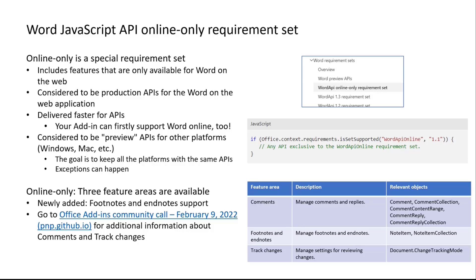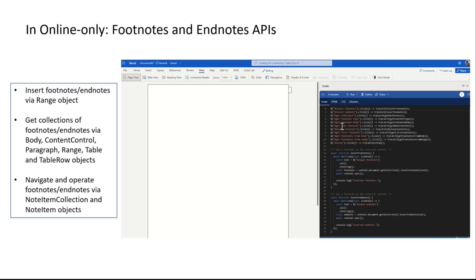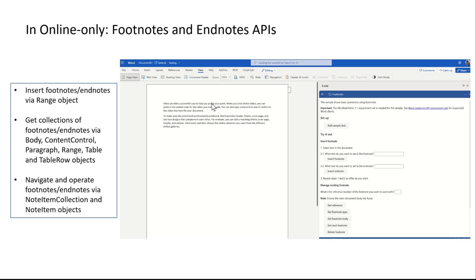We now have three major feature areas supported in this online-only requirement set: footnote and endnote support, comments, and track changes. Back in February, we had an introduction for comments and track changes as a preview version, but in the GA version of this online-only set, we added more capabilities for comments and also added support for footnotes and endnotes.